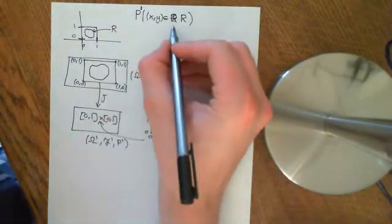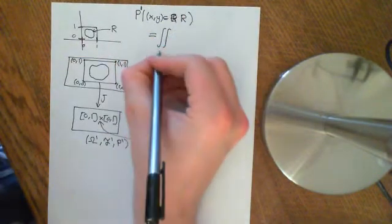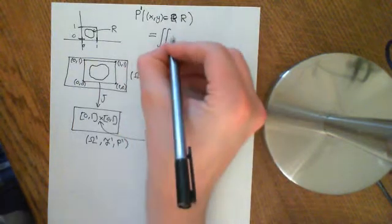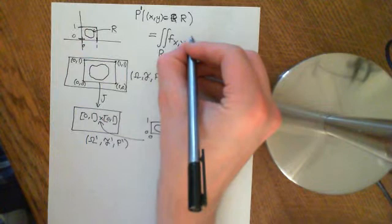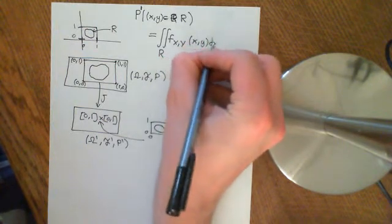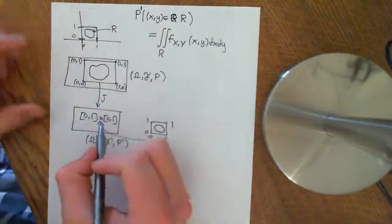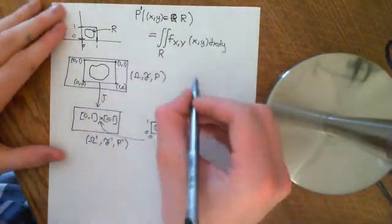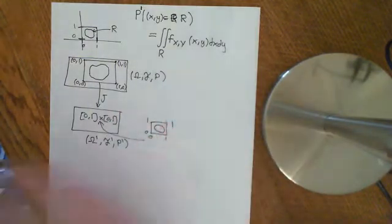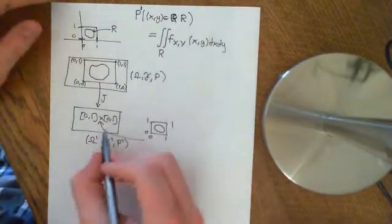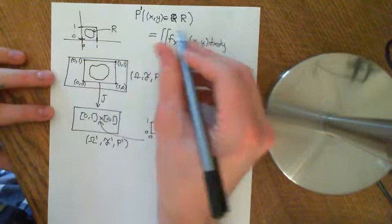So if we want the probability that (x, y) is within a region, that is going to be the double integral over the region of the joint probability density function f(x, y) dx dy. Remember that although I've been talking about the joint random variable as a function describing ordered pairs, it's equivalent to having two random variables x and y each mapping onto real numbers and combining them. They're utterly equivalent — you can go from those to this and from this to that.